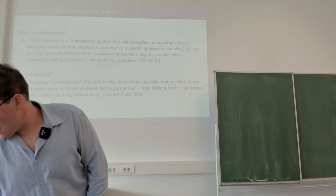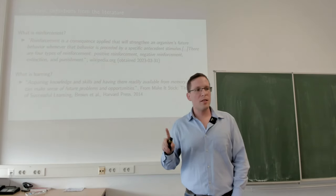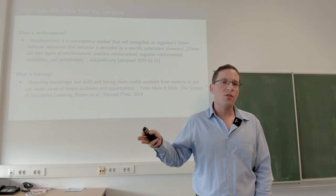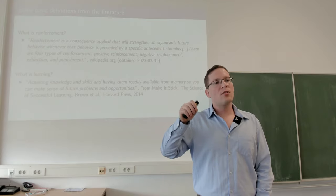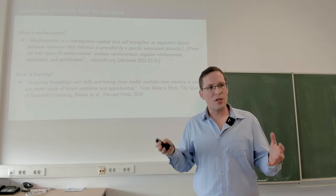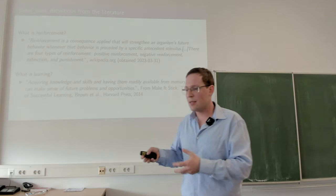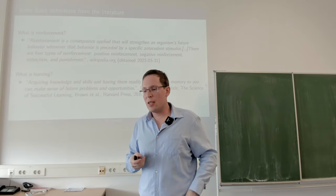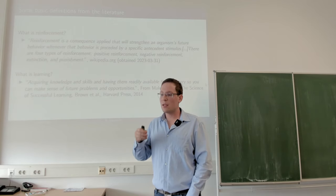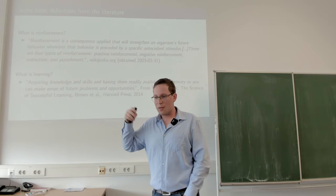Reinforcement learning is made up of two words: reinforcement and learning. Reinforcement learning, being a wide category of research, is largely humans trying to teach a computer to learn the way humans do. It falls into a larger scheme of helping actors make decisions or learn in the way that humans do. Reinforcement is a consequence that strengthens an organism's future behavior when that behavior is preceded by a specific stimulus. There are generally four types of reinforcement: positive reinforcement — give the dog a treat; negative reinforcement — give it fewer treats; extinction — you might prune off poor agents; and punishment.